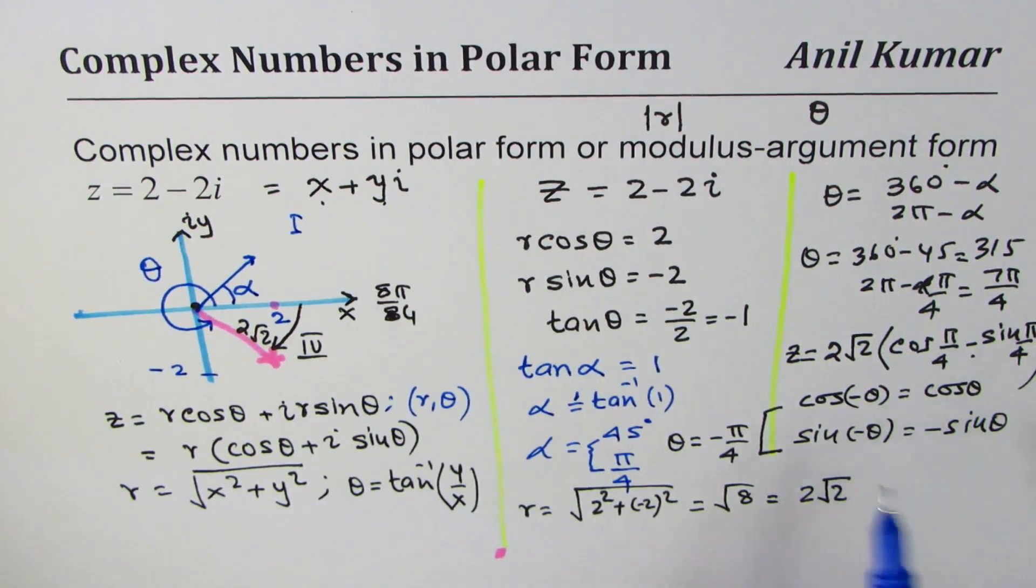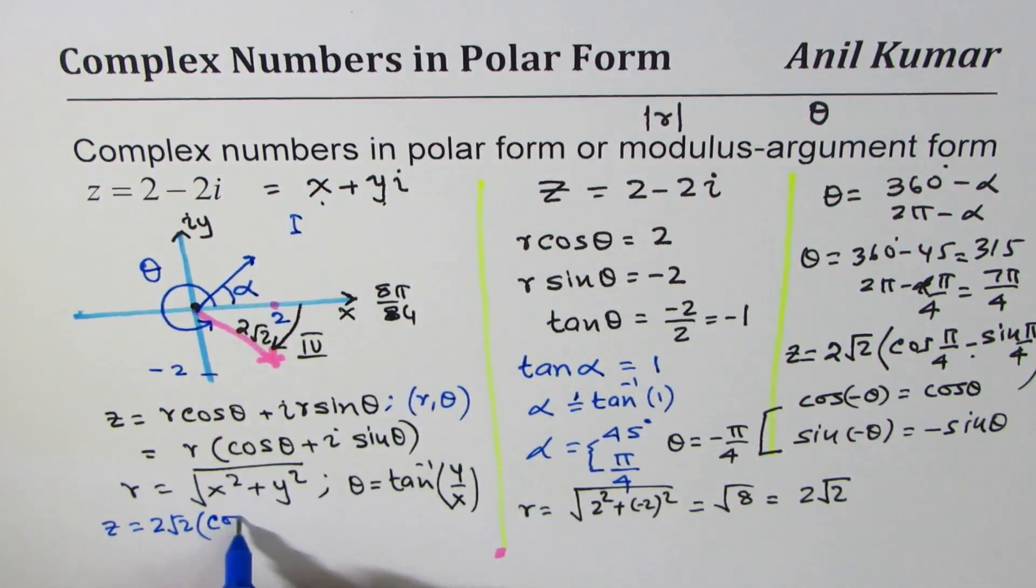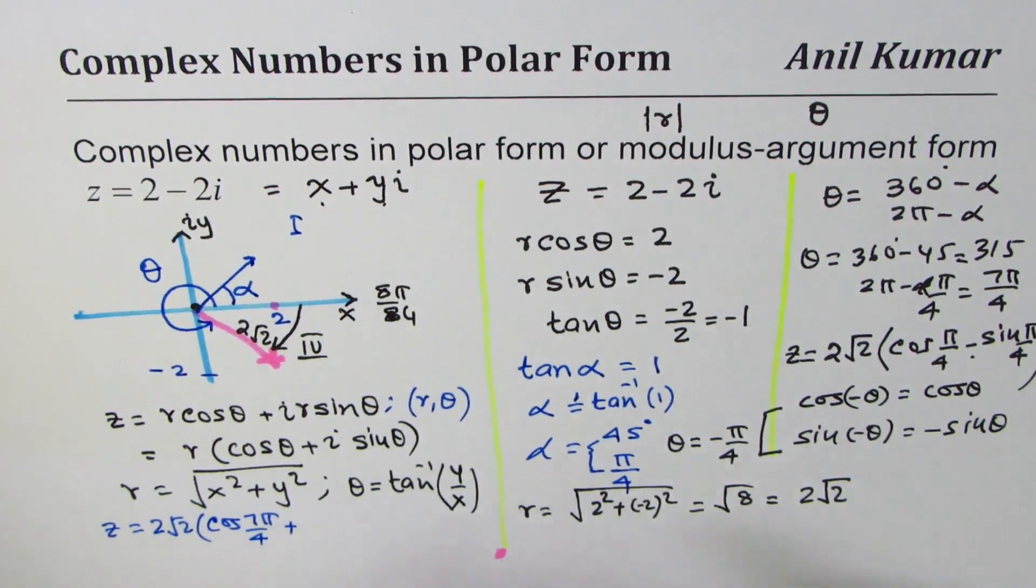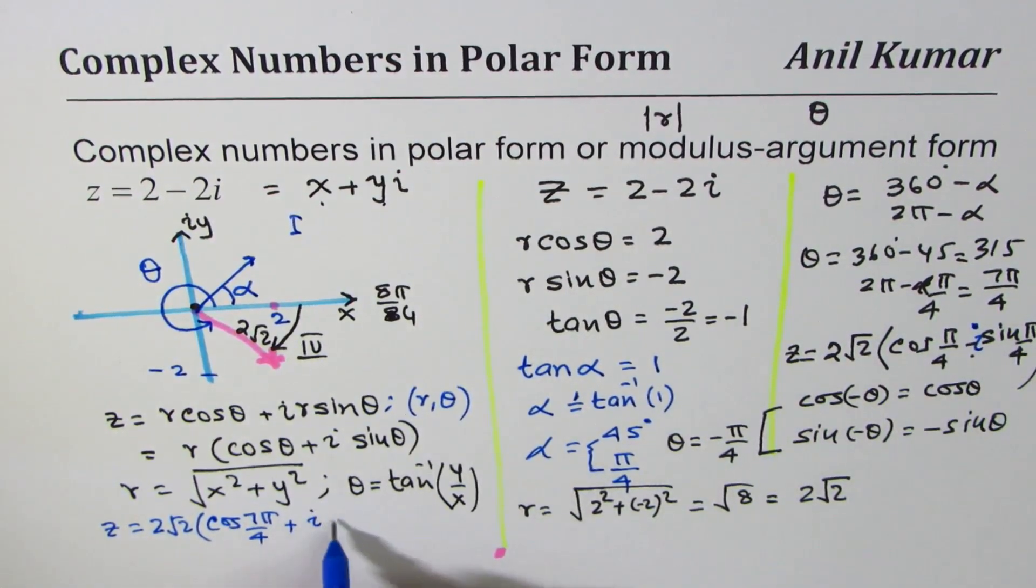Well the other results, we were very close to writing we could have written 2 square root 2 cos 7 pi by 4, oh I forgot to write i, I'm sorry, plus i sin 7 pi by 4.